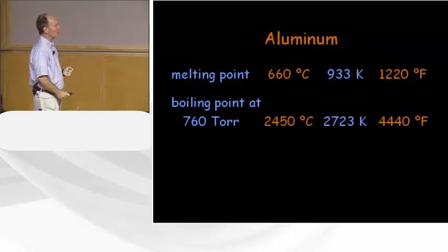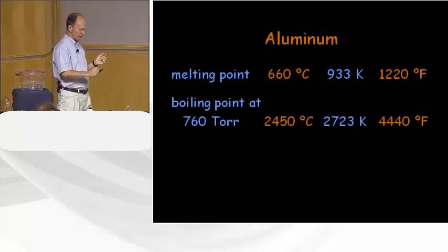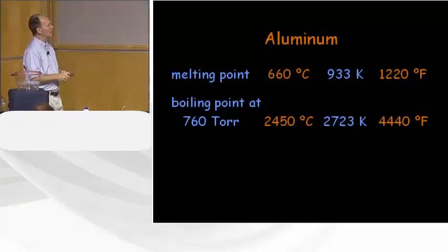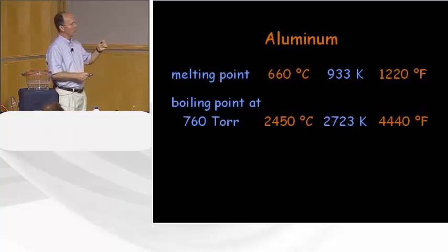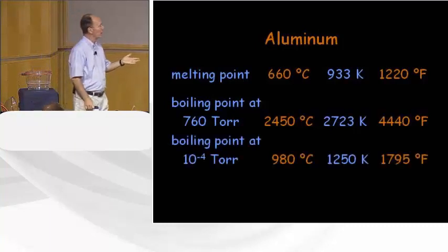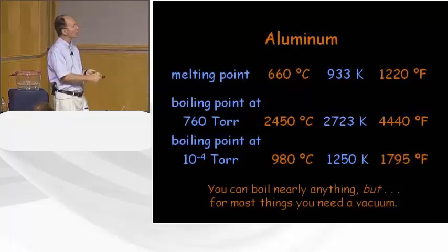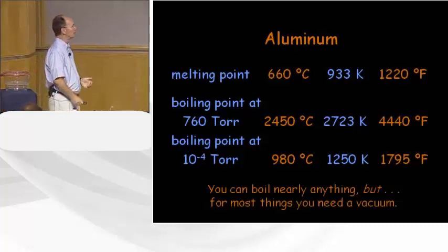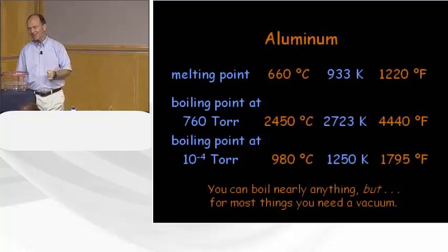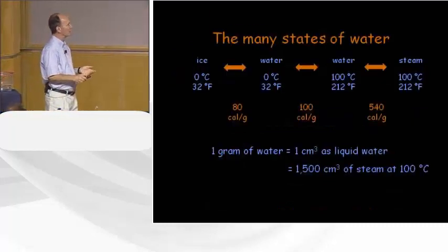To give a real sense of how important vacuum is: the melting point of aluminum is around 660°C, and the atmospheric boiling point is about 2,500°C. But at 10⁻⁴ torr, the boiling point drops by more than a factor of 2 on the Kelvin absolute scale — down to around 1,200°C. Reducing the pressure makes it a lot easier to vaporize materials. You can boil nearly anything, but for most things — particularly metals — you need a vacuum system.